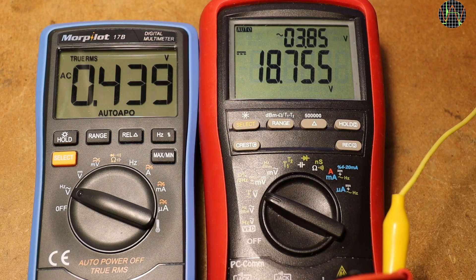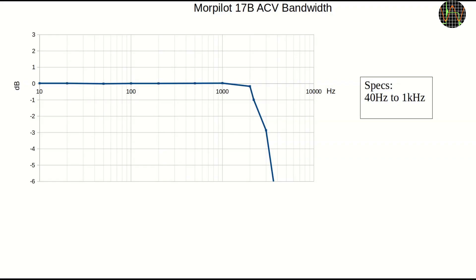The bandwidth for AC is specified as 40Hz to 1kHz and yes they mean it, boy does it drop after 2kHz. On the low frequency side it did work with no noticeable drop down to 10Hz.